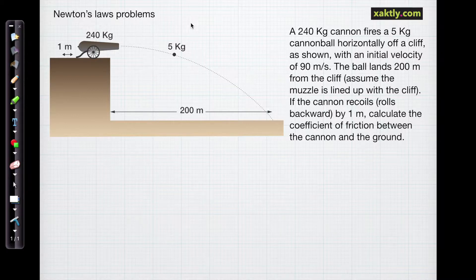What we're trying to find is the coefficient of friction - after all, that's what's going to stop the cannon - between the cannon and the ground. We're going to have to calculate the acceleration, the stopping force, and then finally mu, the coefficient of friction.